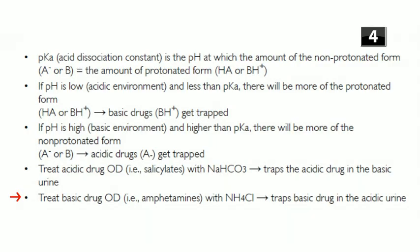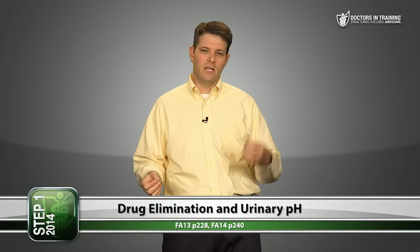Don't be confused: giving IV bicarb doesn't trap the aspirin in the serum — the body concentrates the bicarb in the urine, and that's what traps the drug there. To treat overdoses of basic drugs like amphetamines, you acidify the urine by giving ammonium chloride, which traps those basic drugs in the acidic urine. Give bases to eliminate acids; give acids to eliminate bases.